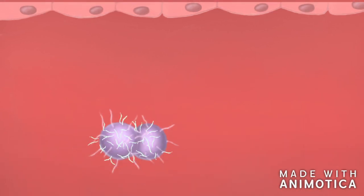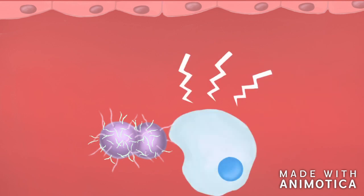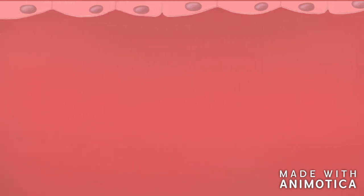Neisseria expresses lipo-oligosaccharides, LOS in short. LOS is a lipid which can be bound by immune cells. The binding by immune cells will alarm the immune system of the presence of Neisseria. The immune system will start an immune response to remove the bacteria from the blood. This response is called sepsis and is a deadly condition for the body.